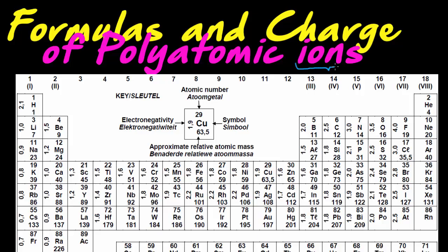You know what an ion is — an ion is a charged particle. For example, sodium has one valence electron and would like to get rid of it, leaving it with an excess of protons and therefore a positive charge. It's all about what happens to the electrons: if we give away electrons we have a positive charge, if we receive electrons we have a negative charge.